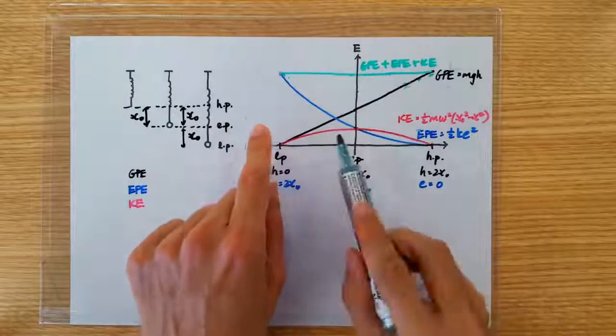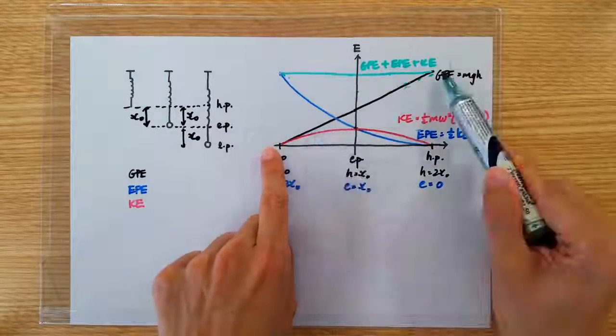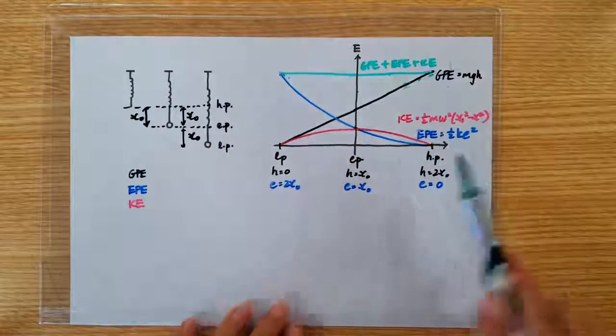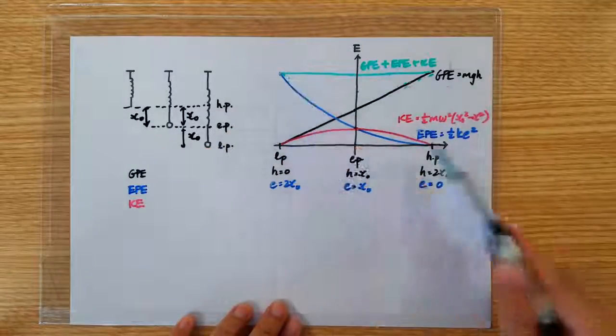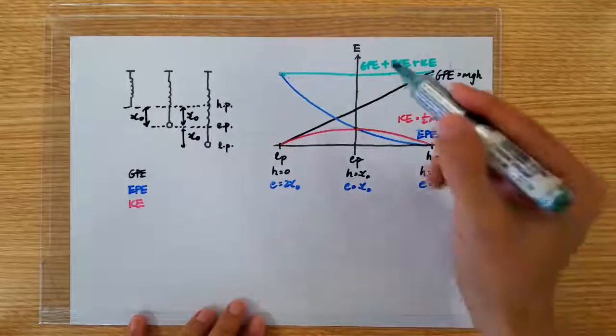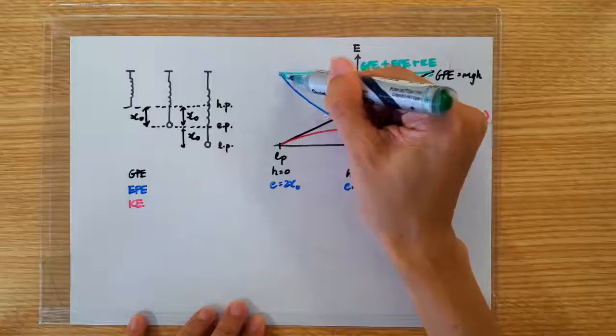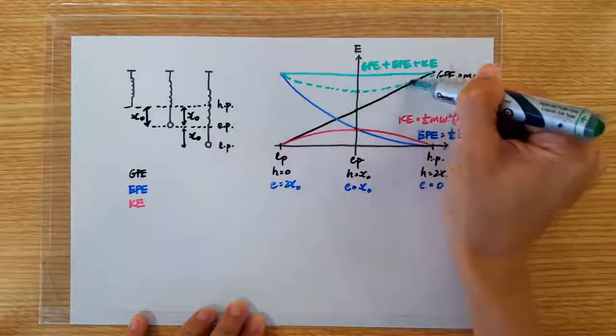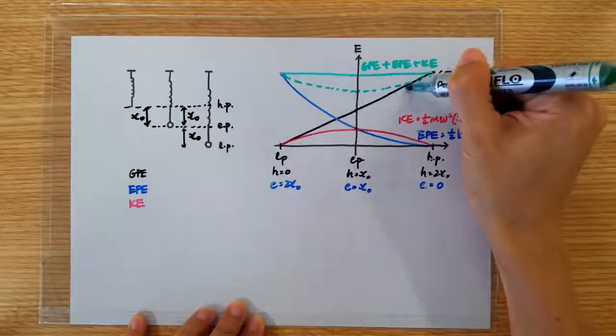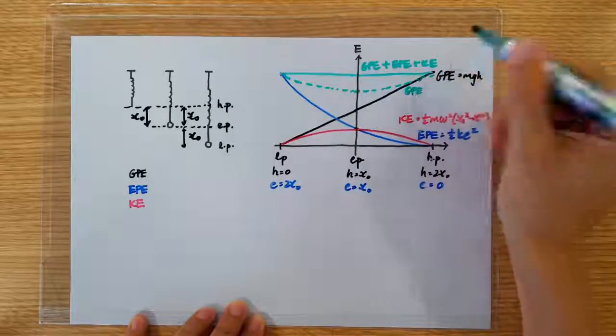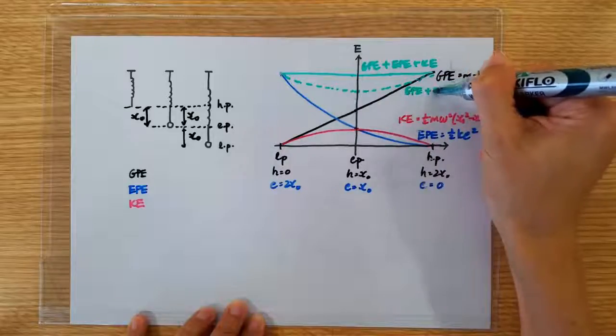Now, if we were to add up the GPE and the EPE at every point, meaning the black line and the blue line, what we get should be the total potential energy of the mass. And the result of this addition will give us a quadratic curve. So this dashed green line represents the summation of GPE and EPE.